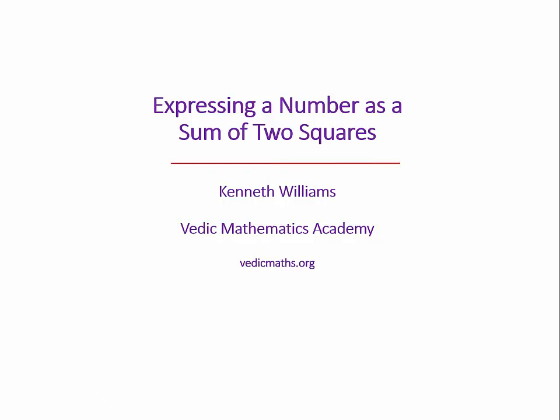Expressing a number as a sum of two squares. First, let's look at a very simple case where we can see the answer straight away. For 109, we can see by mere observation that it's 10 squared plus 3 squared.